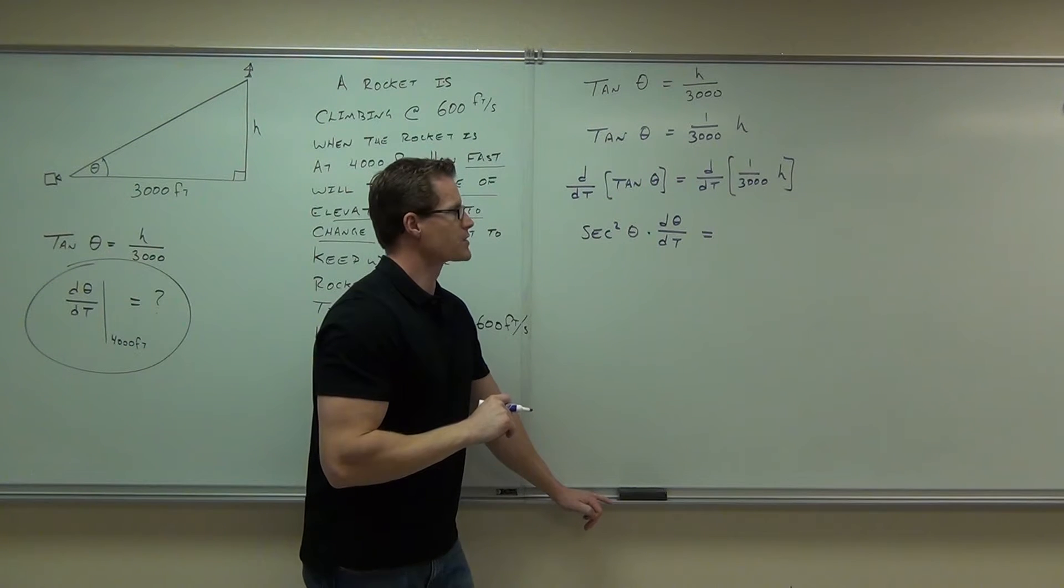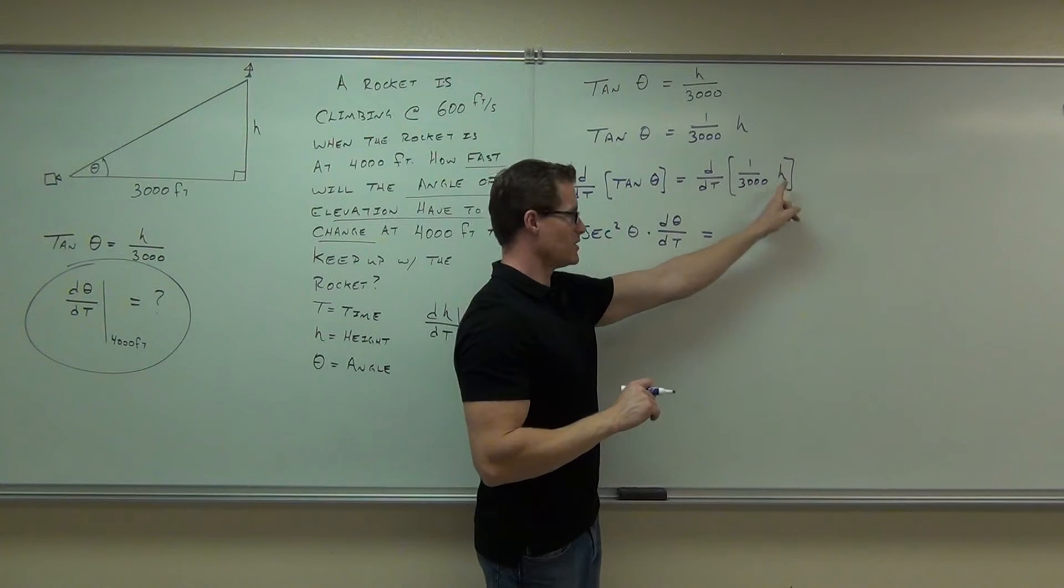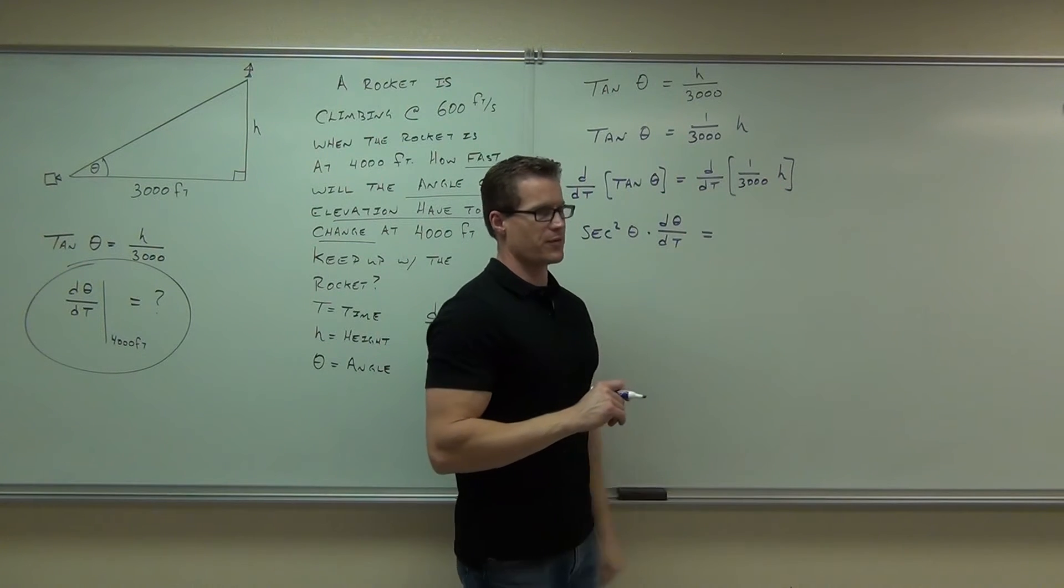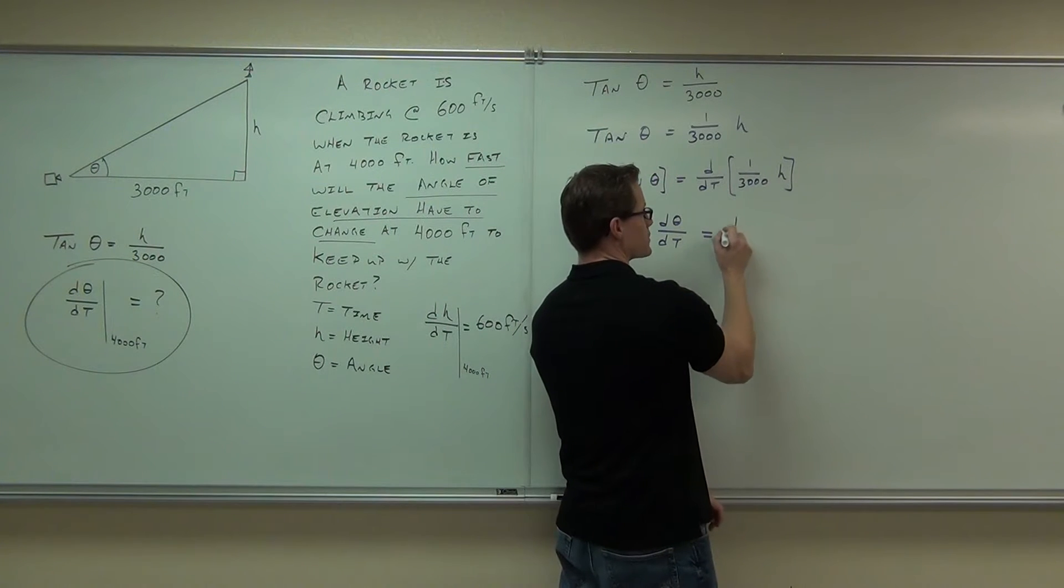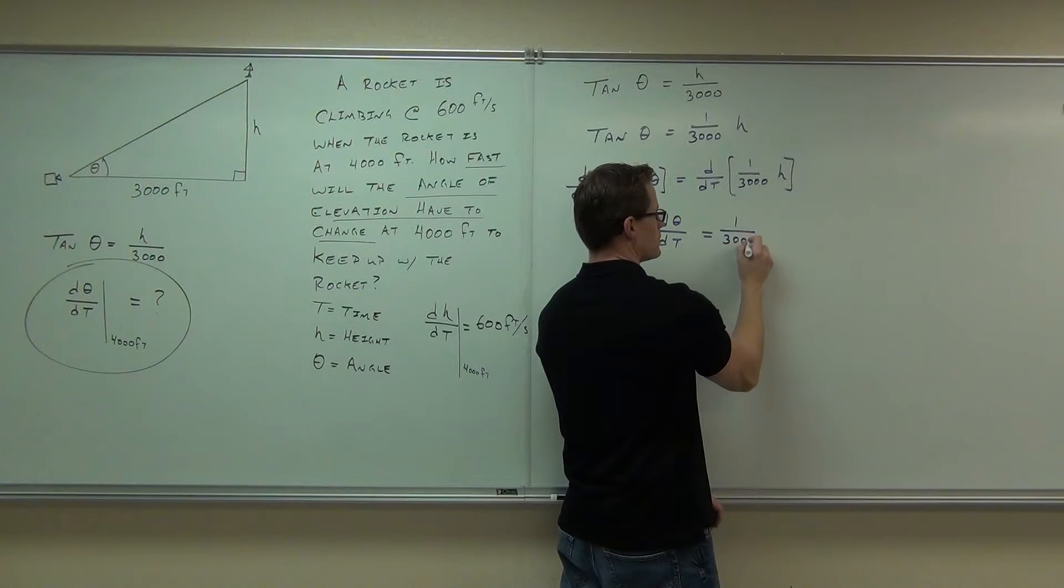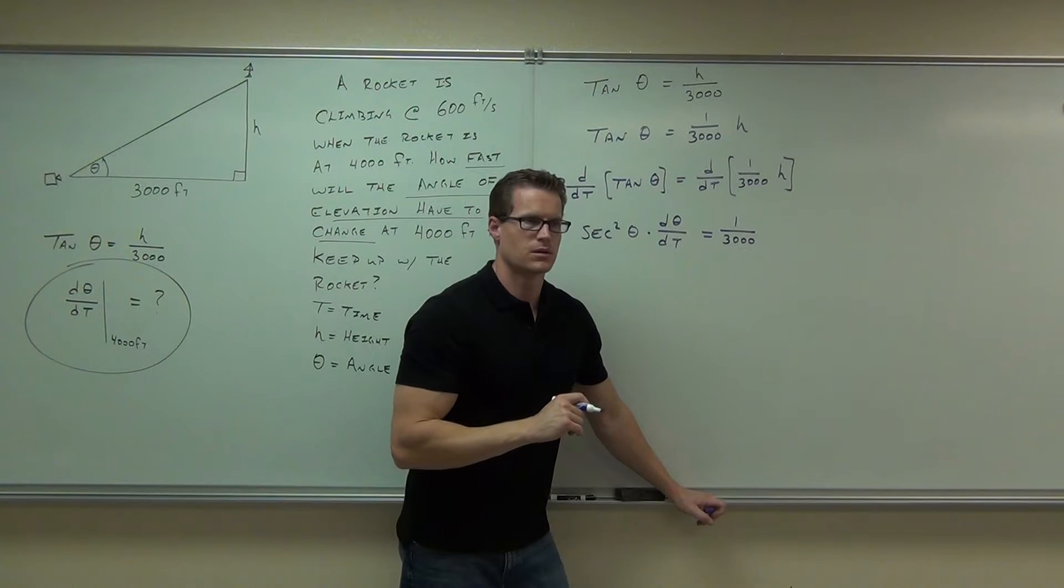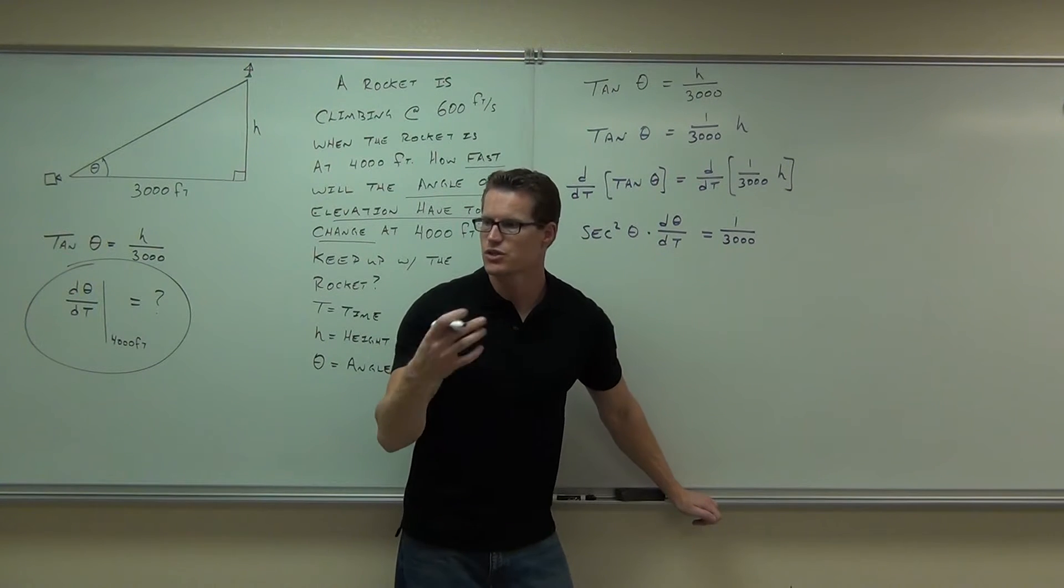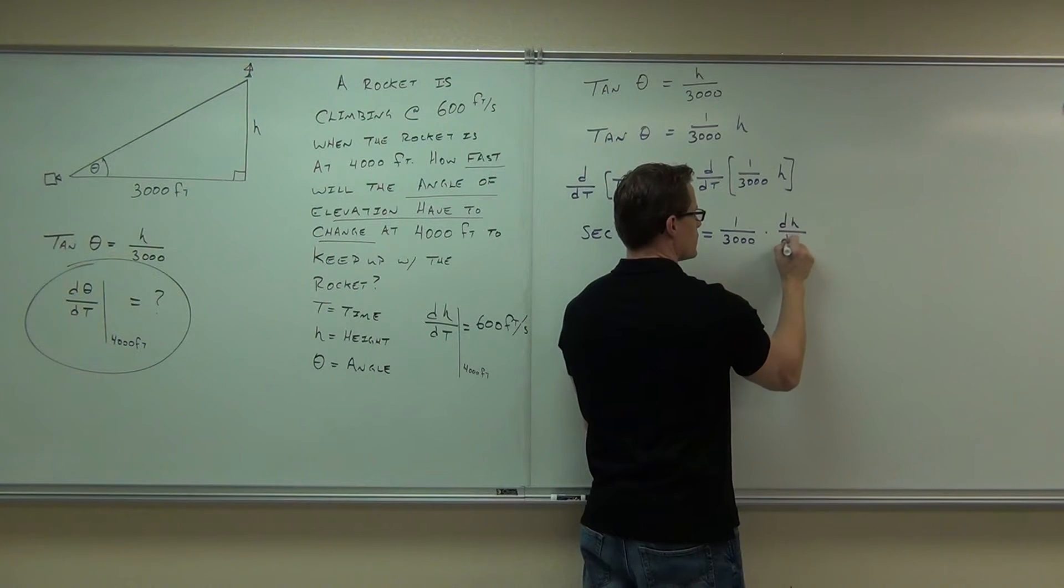All right. Now, other side. What is one three thousandths h when I take a derivative of that? The constant's still there, dh dt. Good. Why dh dt? Because it's in respect of time. So h is a function in terms of time, so you absolutely must have a dh dt.